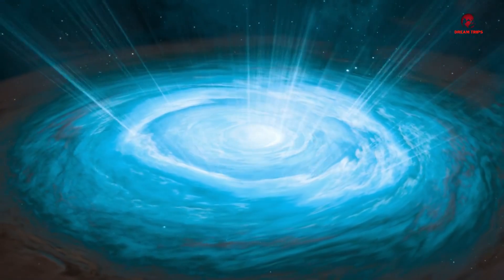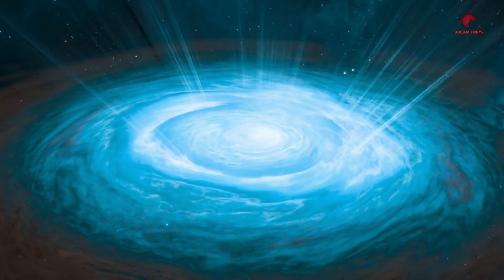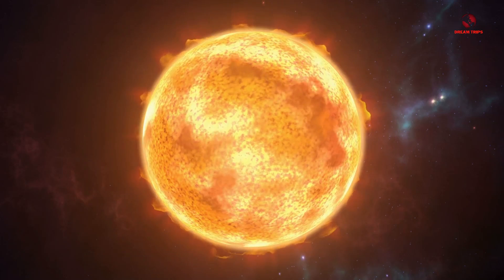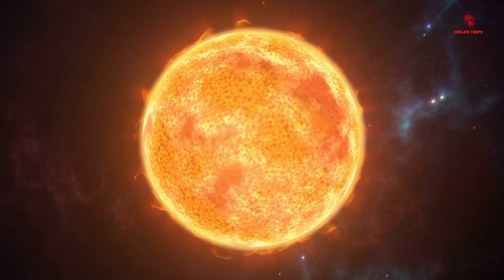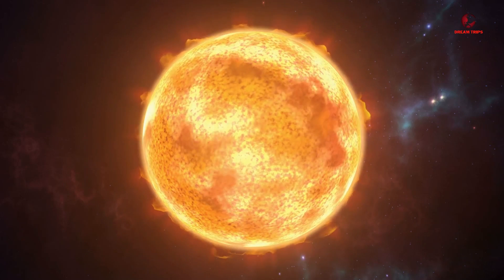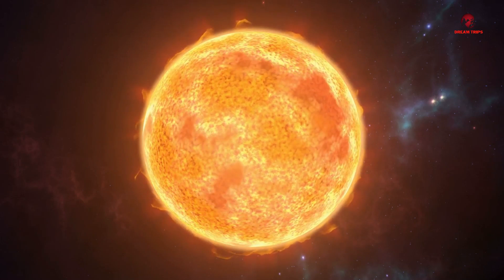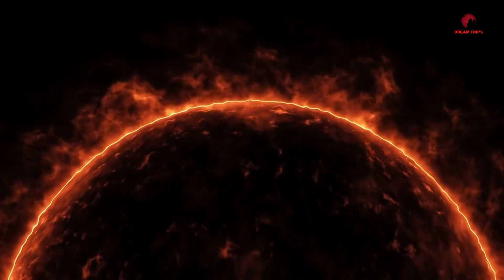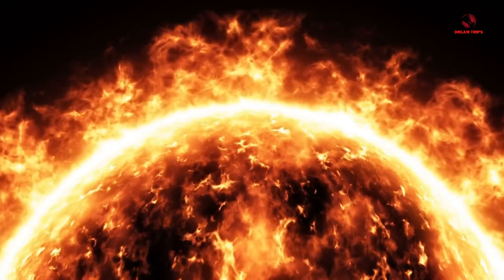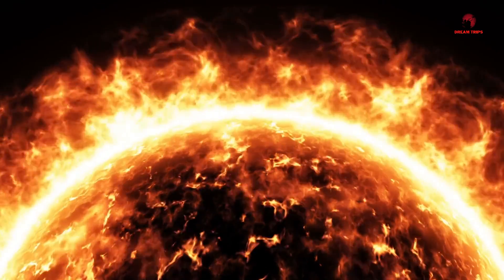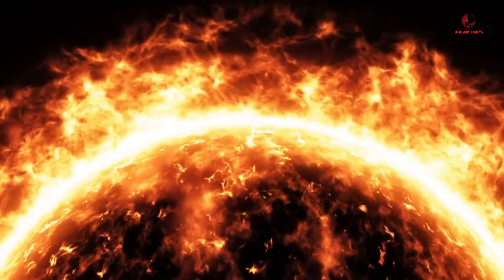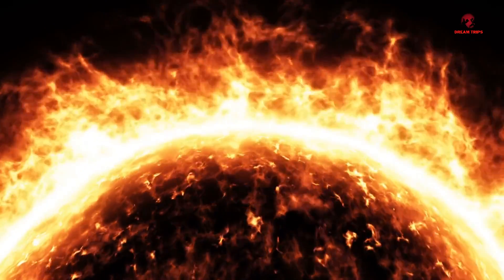As we unveil UY Scuti through high-definition visuals and animations, the comparison between it and our sun becomes startlingly clear. Imagine, if you will, our solar system superimposed next to UY Scuti. This behemoth star would engulf not just Mercury, Venus, Earth, but extend far beyond, likely swallowing up Jupiter and beyond. The visualization of this comparison not only highlights the immense diversity in star sizes within our universe, but also underscores the special, albeit smaller, nature of our own sun.